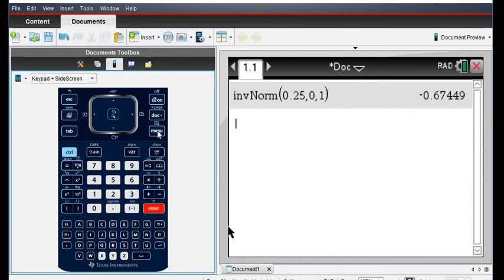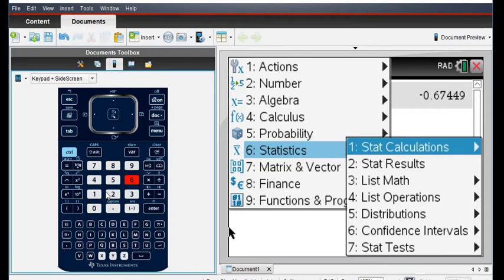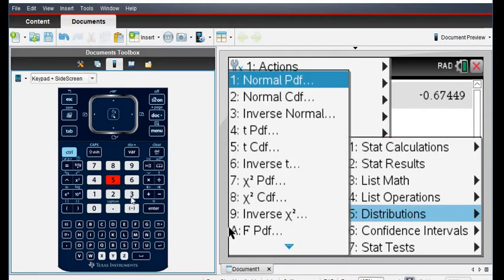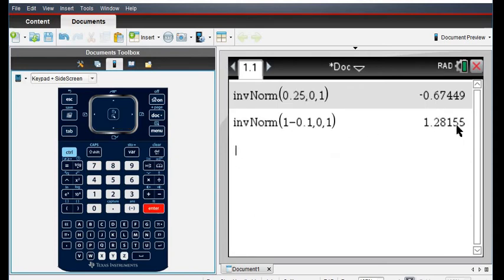So to find this, it's under menu, option 6 statistics, distributions, and option 3, the inverse normal. You can either type in the 1 minus 0.10, which would give you the area to the left. Like I said, for this one, the math isn't hard. And I get 1.28155.